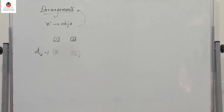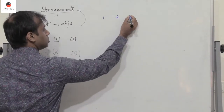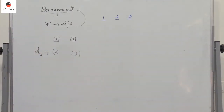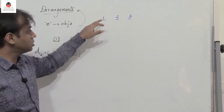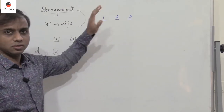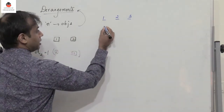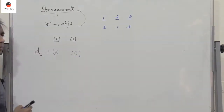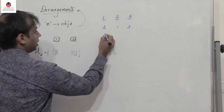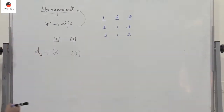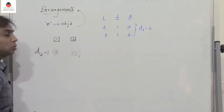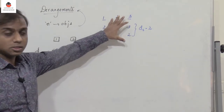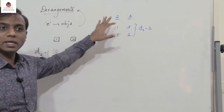Now let us consider three objects: 1, 2, and 3 in their original positions. We have to find how many ways these three objects can be permuted such that 1 is not present in position 1, 2 is not present in position 2, and 3 is not present in position 3. The valid arrangements are (2, 1, 3) — wait, (2, 3, 1) and (3, 1, 2). So D3 is 2.